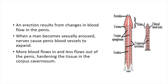An erection results from changes in blood flow in the penis. When a man becomes sexually aroused, the nerves cause the blood vessels of the penis to dilate. More blood flows in and less flows out of the penis, leading to storage of blood and hardening of the tissue in the corpus cavernosa.